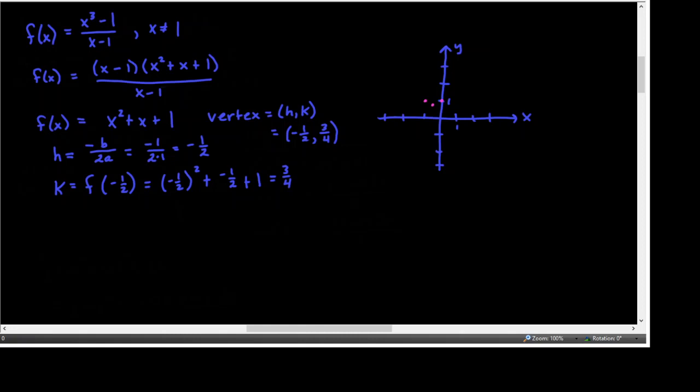I'm not going to worry too much about getting a whole bunch of points. I know that's the vertex — the low point — and it goes like this. We get to 1 and we can't do anything because we haven't figured out what's going to happen there. So if you look at a table of values — this is the numerical approach — if you make a table of values for x values near 1, you can discover the behavior. I'm going to write it down.